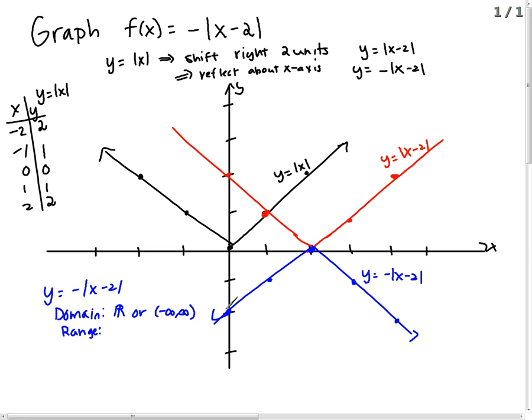The range, what y values will this picture attain? Looking at my picture, looks like I will get y equals 0 and then y values smaller than that. So y is less than or equal to 0. I can also write this as negative infinity to 0 with the parentheses around negative infinity, because it's not a number, and a bracket around 0.